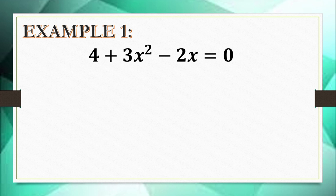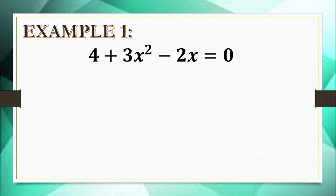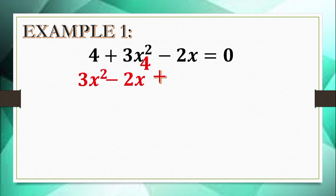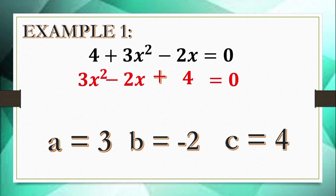So how will we do it? All we need to do is rearrange the expression. Because they are all on the same side of the equation, their signs will be carried over. We write the quadratic term first: 3x², followed by the linear term negative 2x, and the constant term positive 4, giving us 3x² minus 2x plus 4 equals 0. We can now identify: a is 3, b is negative 2, and c is 4.